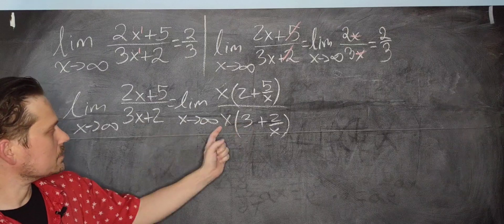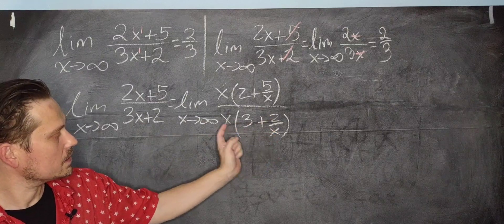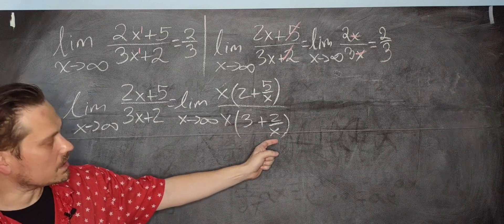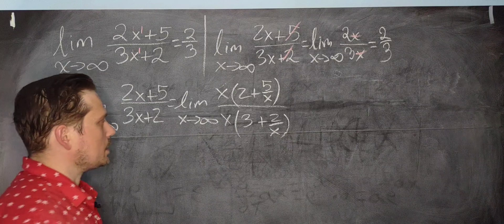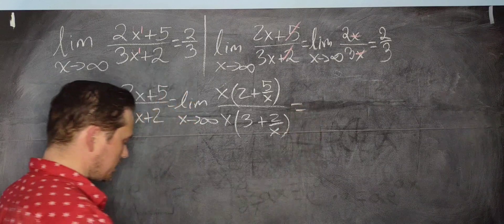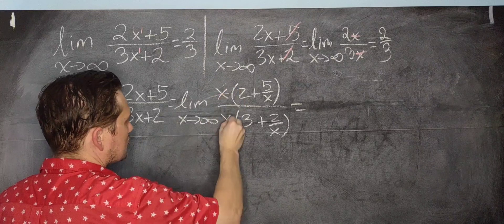3 times x is 3x. If you distribute the x rather to the 2 over x, this x cancels with this x in the bottom, leaving only the 2 in the numerator, and that's it. You see? And now what you can do is you can cancel off these x's essentially. So basically cancel this with this, and all that remains is the limit